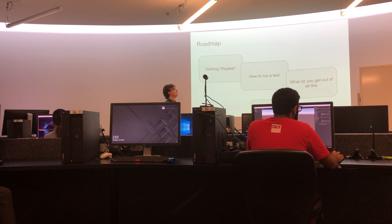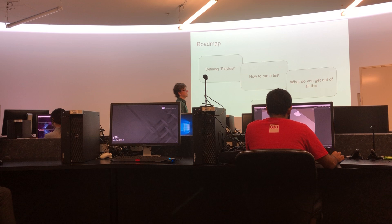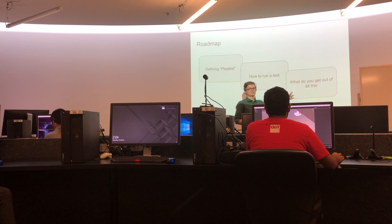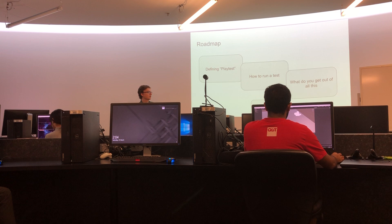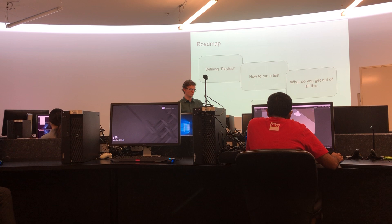Here's our roadmap for today. We'll start by talking about what a playtest is, basically starting from ground zero. But there's differences between playtesting and QA, and public playtesting, et cetera. Then we'll come to some ideas for how to run a test. And finally we'll talk about why we run tests and what you can expect to gain from doing a test, in terms of actual actionable data. And then we've got some bonus stuff at the end - an article I've linked and books that are worth reading.